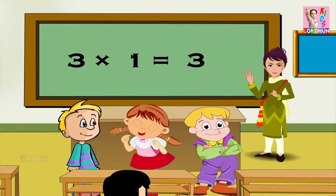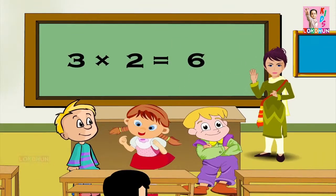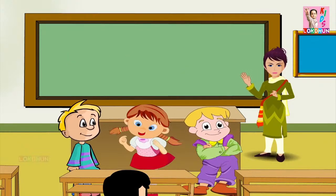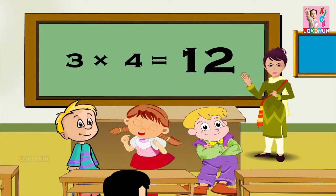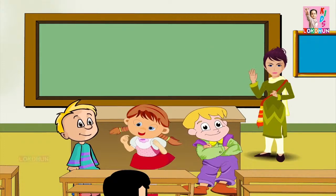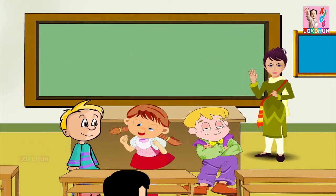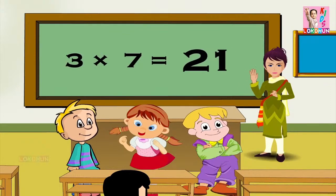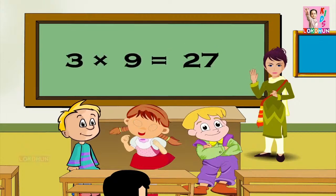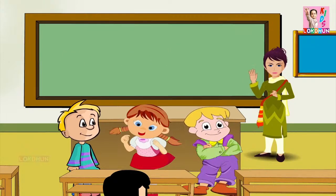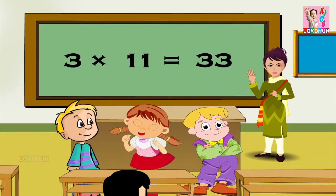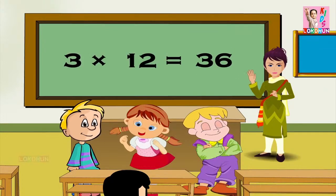3 1s are 3, 3 2s are 6, 3 3s are 9, 3 4s are 12, 3 5s are 15, 3 6s are 18, 3 7s are 21, 3 8s are 24, 3 9s are 27, 3 10s are 30, 3 11s are 33, and 3 12s are 36.